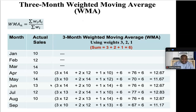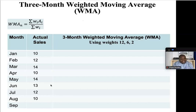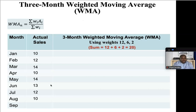That completes our three-month weighted moving average using weights three, two, and one. Let's do another one — this time using the weights 12, six, and two. You can see that the sum of the weights will not be six this time: 12 plus 6 plus 2 equals 20. So our sum of weights for this example is 20.